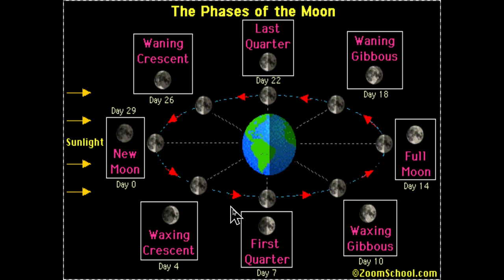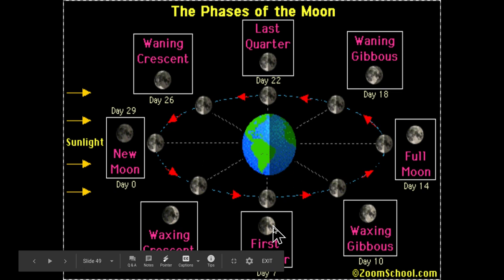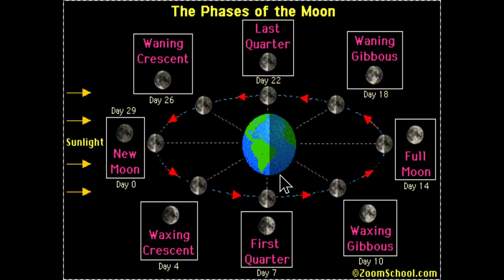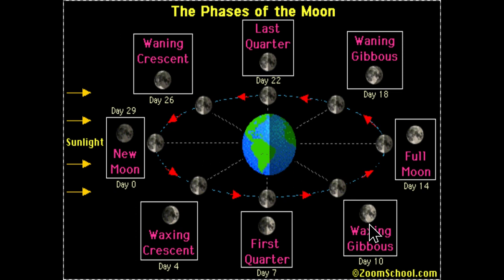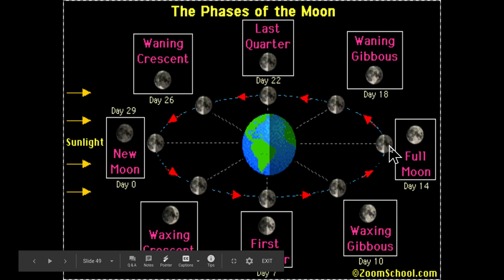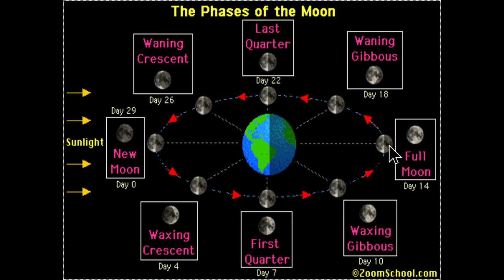Then, going another three or four days, the moon moves into the first quarter phase, where the moon is half showing and the illumination has gotten greater. Moving another three or four days, the moon moves into what we call the waxing gibbous phase. The waxing gibbous is probably one of my favorite phases because it really resembles the shape of a lemon. Then by day 14, the moon has moved halfway around the Earth and we're in the full moon phase.